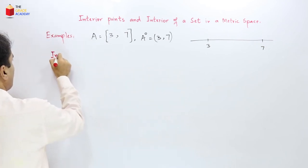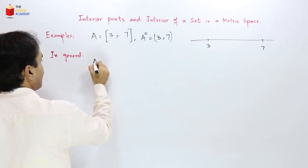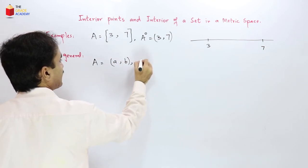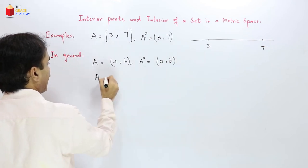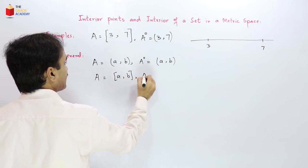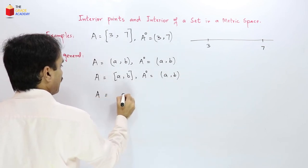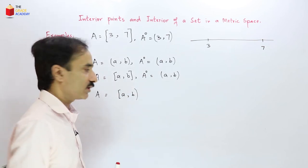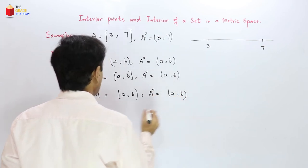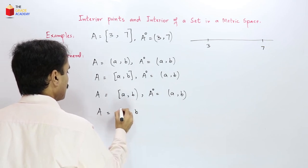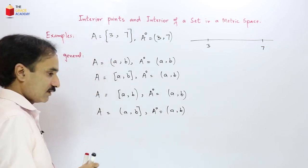In general, if our set A is any open interval (a, b), then its interior is always the same open set (a, b). And if the set A is a closed interval [a, b], then its interior is the open interval (a, b). Similarly, for the half-open intervals [a, b) or (a, b], the interior is also equal to the open interval (a, b).